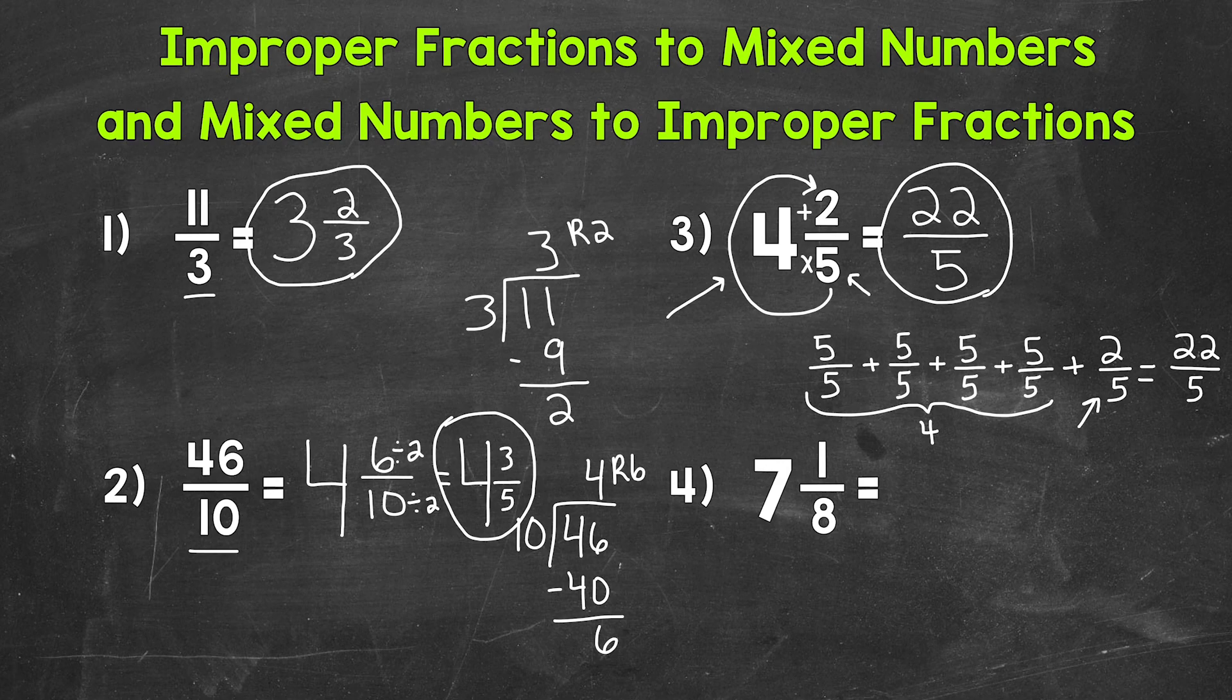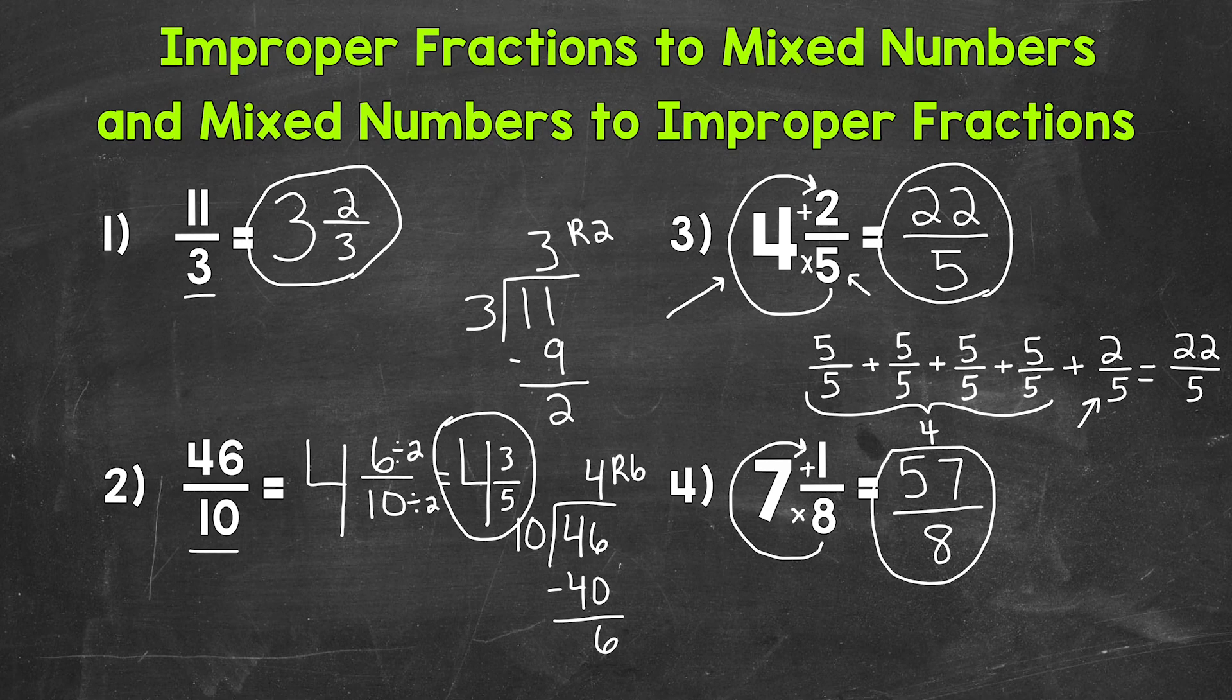Let's try another one and move on to number 4 where we have 7 and 1 eighth. So we start at the bottom and work our way up. We multiply and then add. So 8 times 7 is 56 plus 1 is 57. And then we keep our denominator of 8. So 57 eighths for number 4.